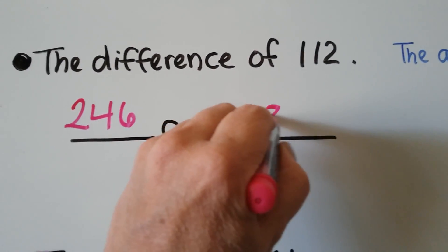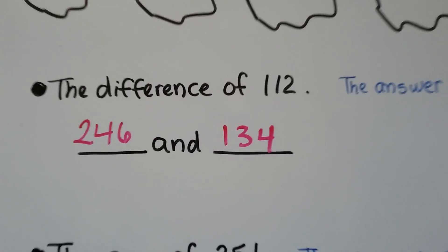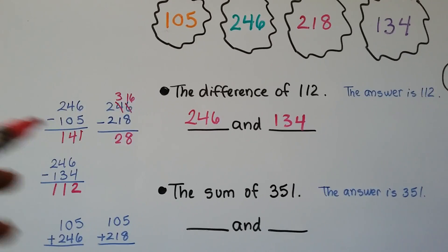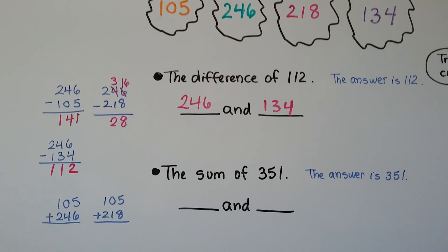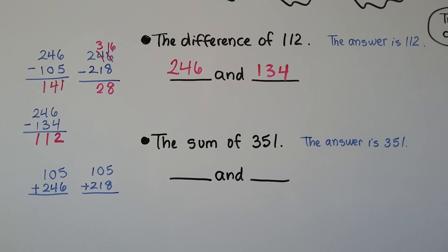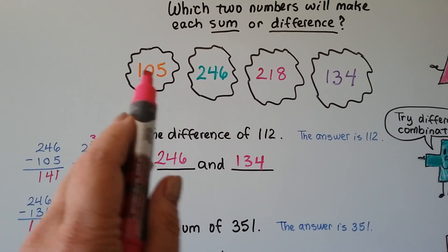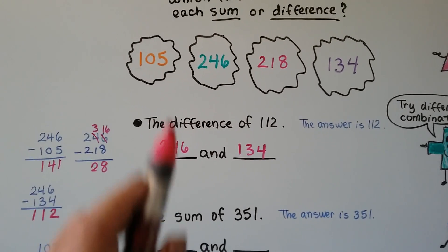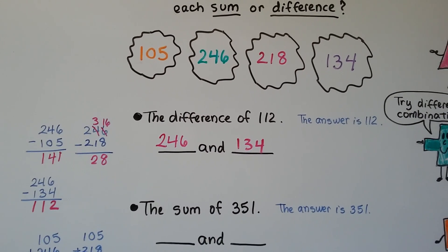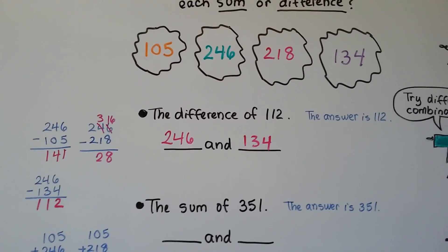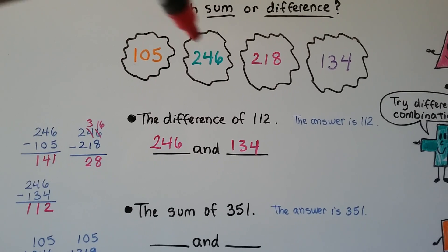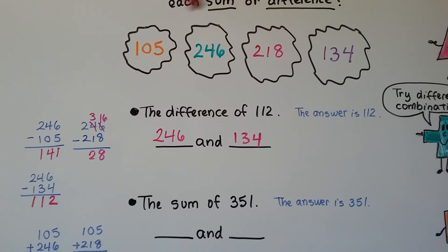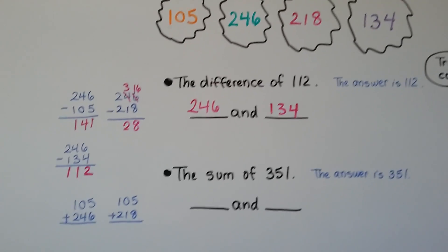246 and 134. The only way we could figure out which would make the difference of 112 was by doing math on the side and just trying different combinations. Now this one says the sum of 351. Two of these numbers, when added together — because a sum is an answer in addition — are going to give us a sum of 351. We have to figure out which ones they are, so we need to try different combinations.